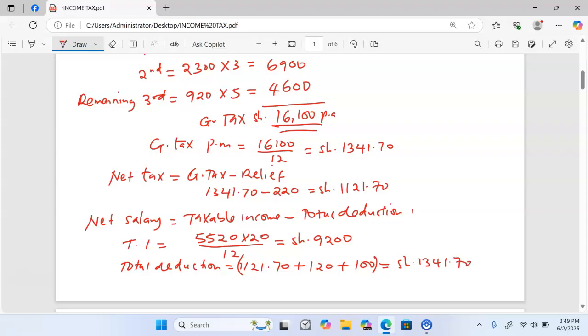Now we can get the net salary. Taking the total taxable income of 9,200 minus total deductions of 1,341.70 gives us 7,858.30 as the answer to this question.